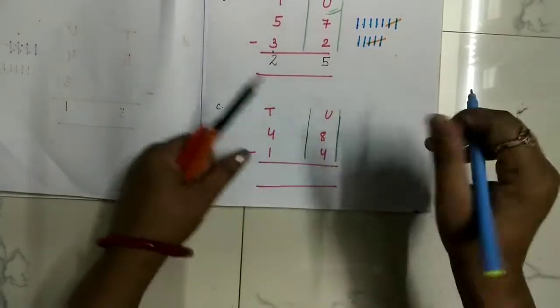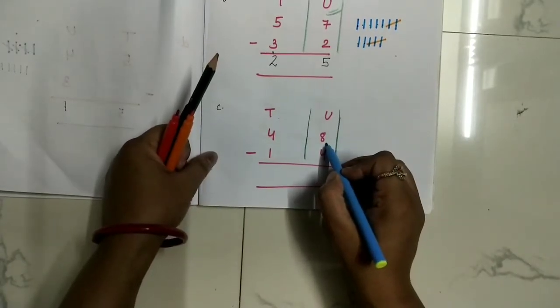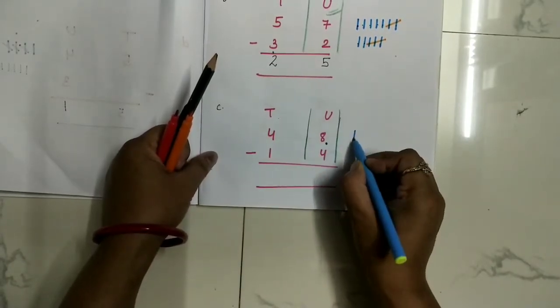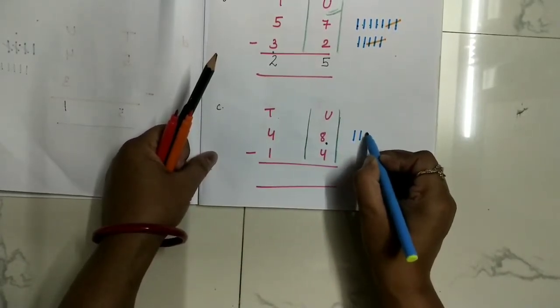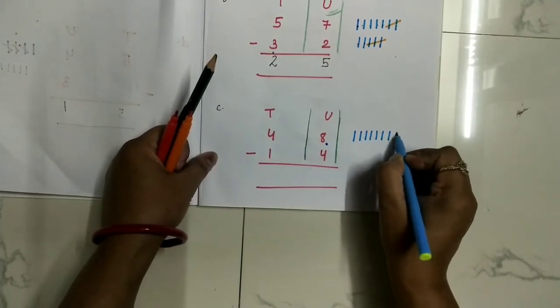Children, come to the units column. In the units column we have 8, so draw 8 lines: 1, 2, 3, 4, 5, 6, 7, 8.